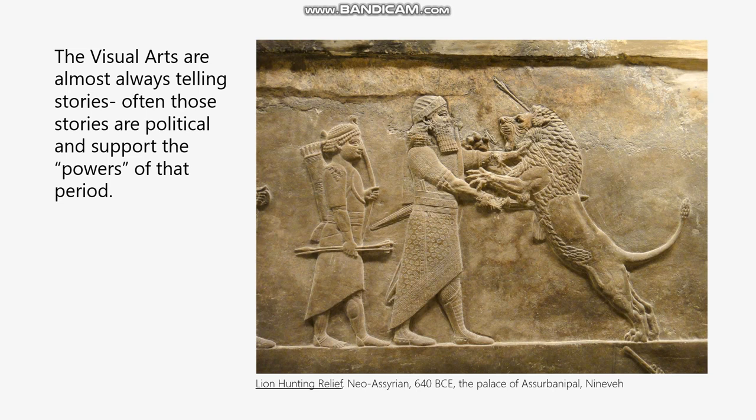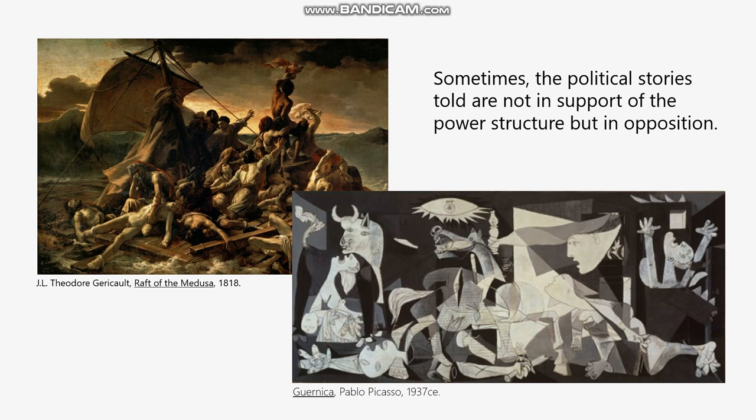An image like Ashurbanipal stabbing that lion right through the chest while holding him at the neck with his bare hands is certainly an image of propaganda. But sometimes artwork is trying to do the opposite — trying to be in opposition to the powers of the time. Sometimes we see artists making artwork clearly in support of the powerful institutions of their day, and sometimes we see artists making artwork that can be viewed as a critique and in opposition to those powers.